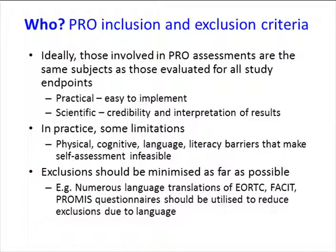Let's think about who first. This is essentially your PRO inclusion and exclusion criteria. Ideally, those involved in the PRO assessments should be the same subjects as those evaluated for all the study endpoints — this is practical, easy to implement, and increases the credibility and interpretability of your results. However, in practice there may be limitations: some patients may have physical limitations such as poor vision or an inability to hold a pen or use a keyboard; others may have cognitive problems or language and literacy barriers that make self-assessment infeasible. Please try to keep your exclusions to a minimum — for example, the EORTC, FACT, and PROMIS questionnaires are available in numerous language translations, which can be utilized to reduce exclusions due to language.